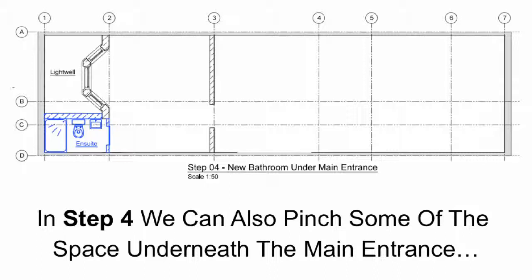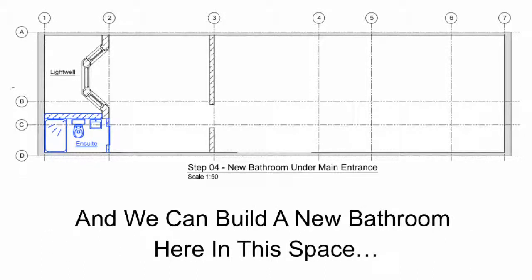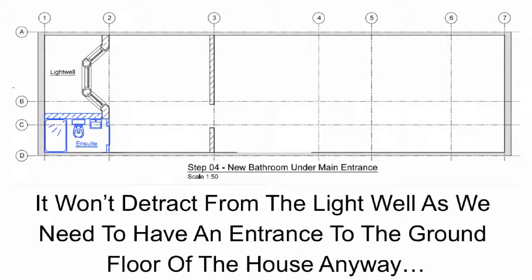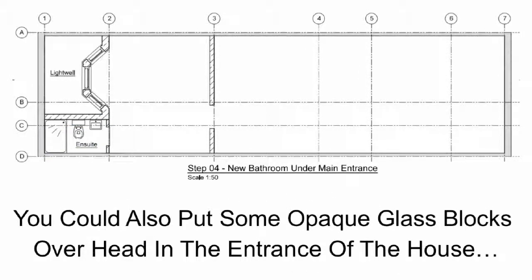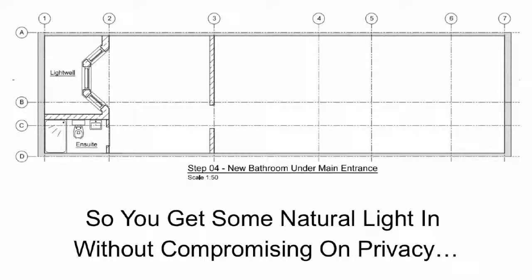In step 4 we can pinch some space underneath the main entrance and build a new bathroom in this space. It won't detract from the light well as we need to have an entrance to the ground floor of the house anyway. You could also put in some opaque glass blocks overhead in the entrance to the house so you get some natural light in without compromising on privacy.